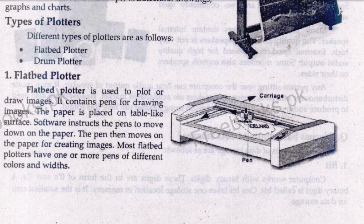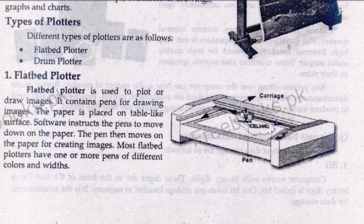Most flatbed plotters have one or more pens of different colors and widths. Why do we have different pens? For example, when drawing a map or architectural work — such as a building structure — there are many lines and thick lines to be drawn. Some pens have different colors and some have different widths, so these varied features are used to print complex drawings.